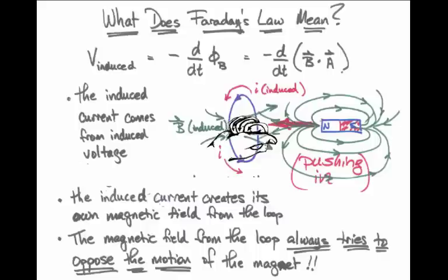In this picture, when the current flows counterclockwise and I wrap my fingers around in the direction of that induced current, my thumb points back toward the bar magnet. That thumb represents the north pole of the induced magnetic field, and now I have the north pole from that induced magnetic field facing the bar magnet, trying to push the bar magnet back out. That's a good way of deducing which way the current is going to flow.